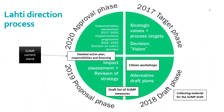The Lahti direction process runs on the same four-year clock for everything. We started this round in 2017, setting strategic values, process targets, and deciding on the vision for sustainable urban mobility. We did scenario work comparing different scenarios together with decision makers, city staff, and citizens. Last year we organized four big workshops where people could come and give feedback on the plans.